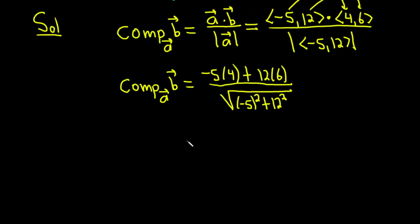This equals negative 5 times 4 which is negative 20, then 12 times 6 which is 72, over the square root of negative 5 squared which is 25, and 12 squared is 144.